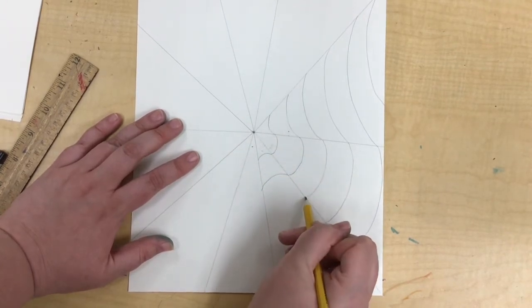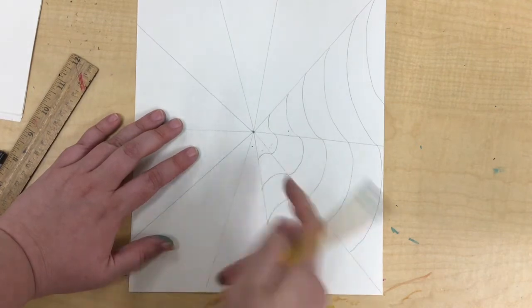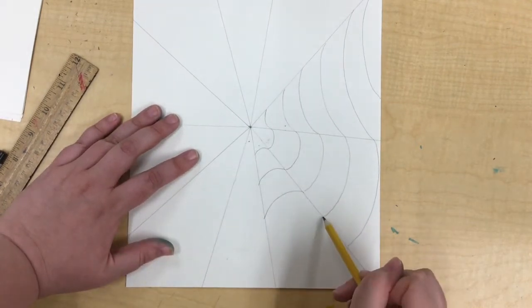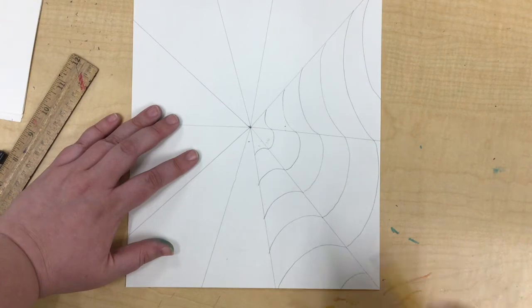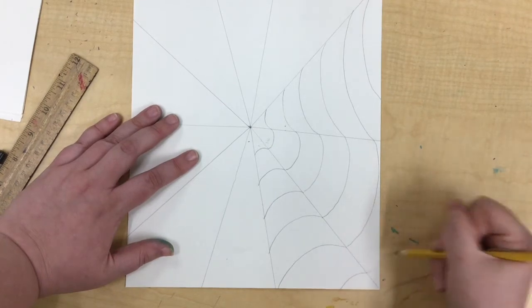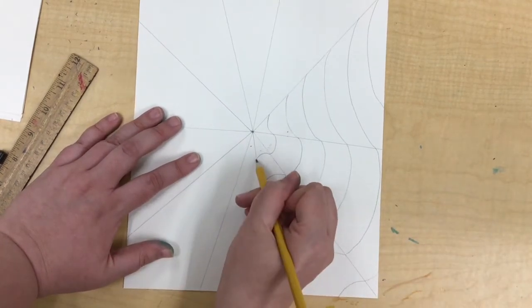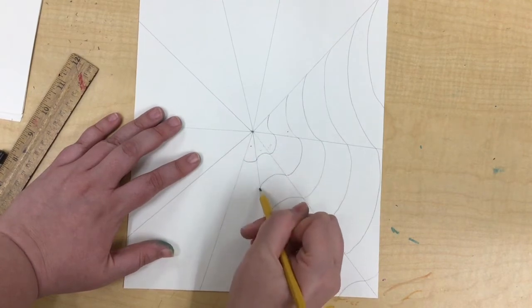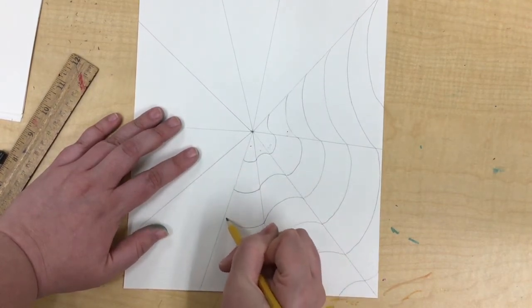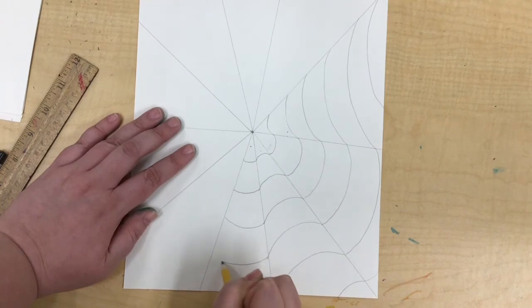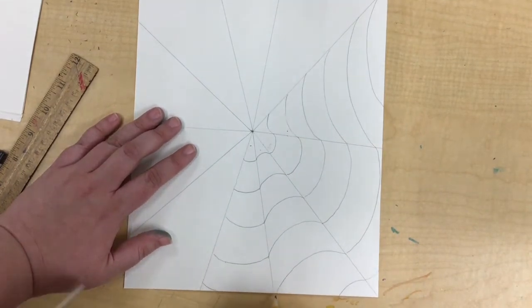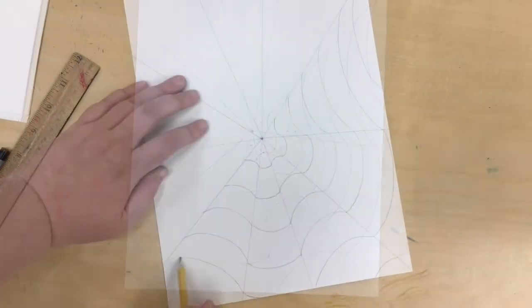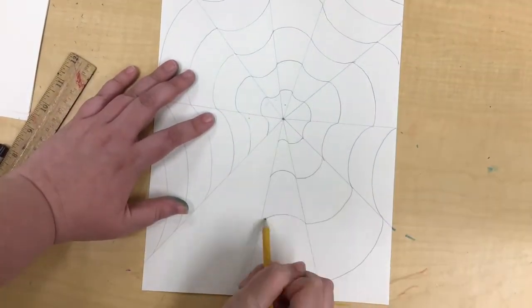All the way around. Now I'm connecting at these points - you can choose to do that or not. Let me make one more here. This one's going to curve under. And you want to go back and forth like this.